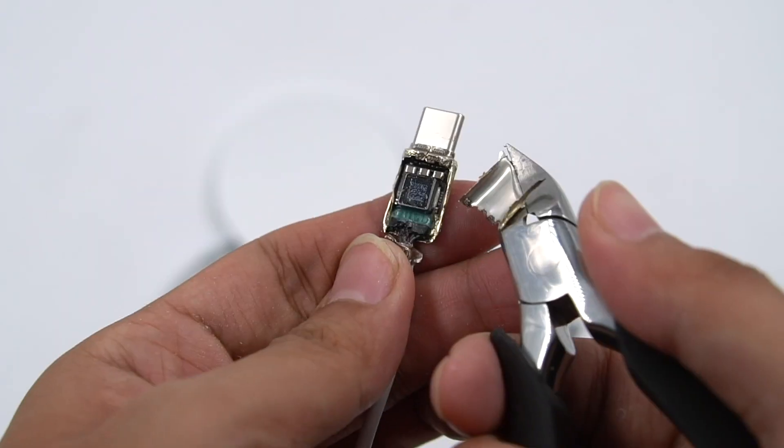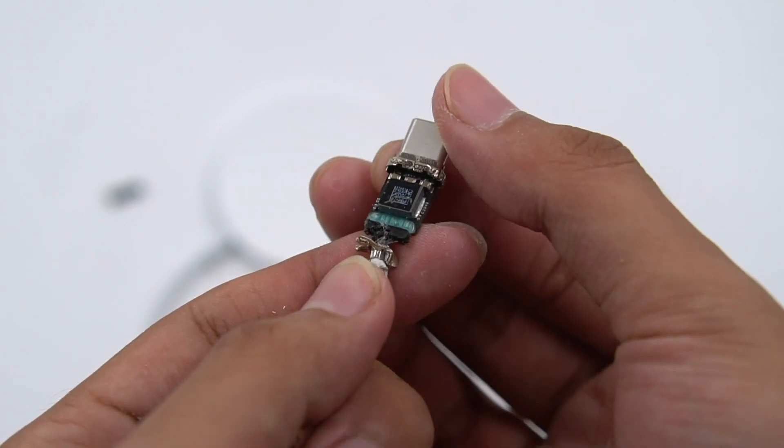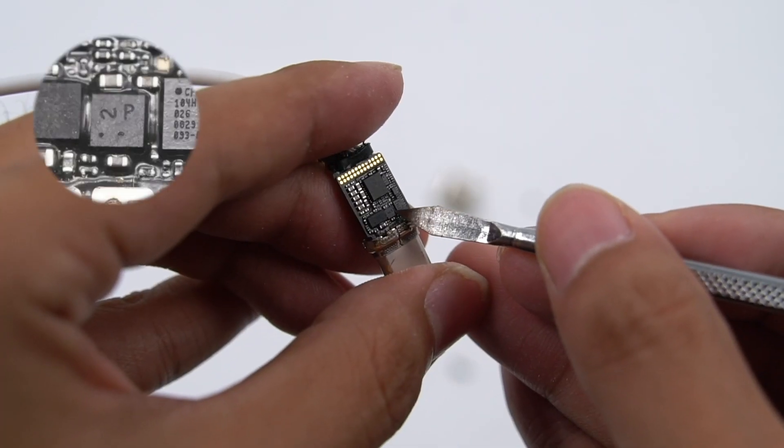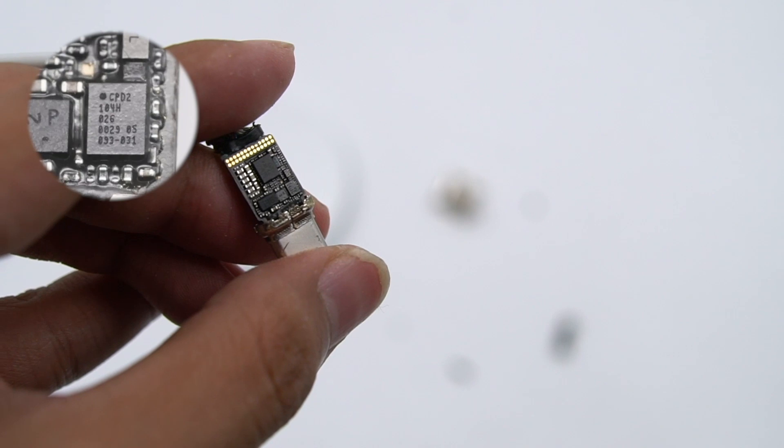The inside PCB is reinforced and protected by solder sheets. There are multiple chips on the front and back of the PCB. A MOSFET is in the middle. There's a Type-C controller, which comes from Cypress CYPD2104.